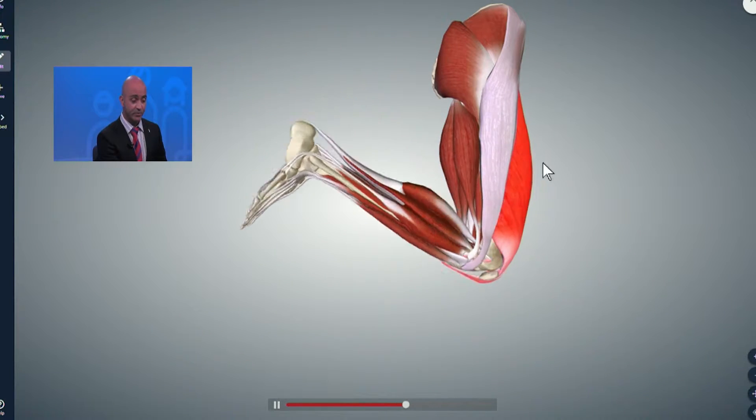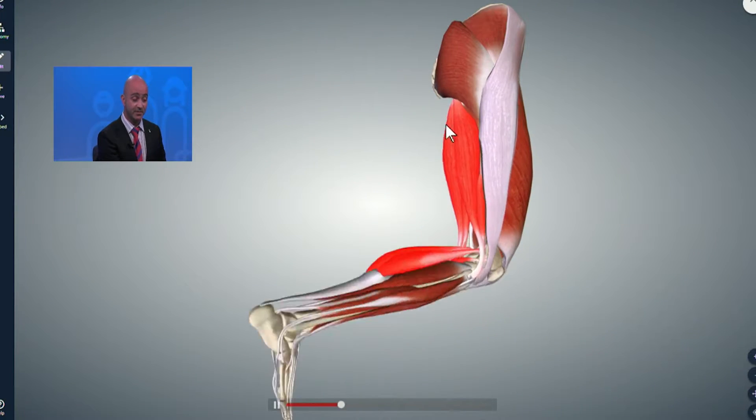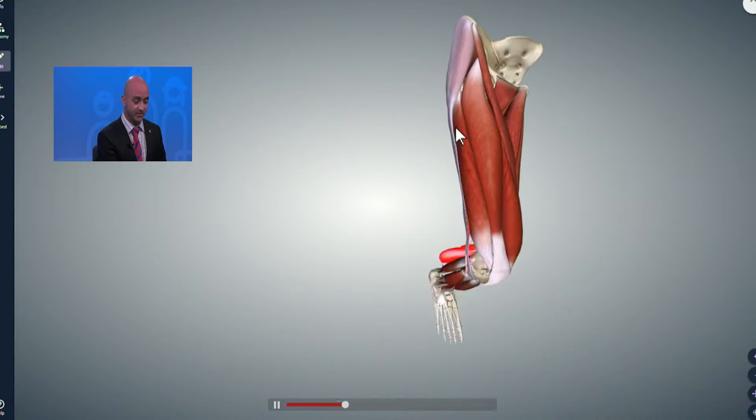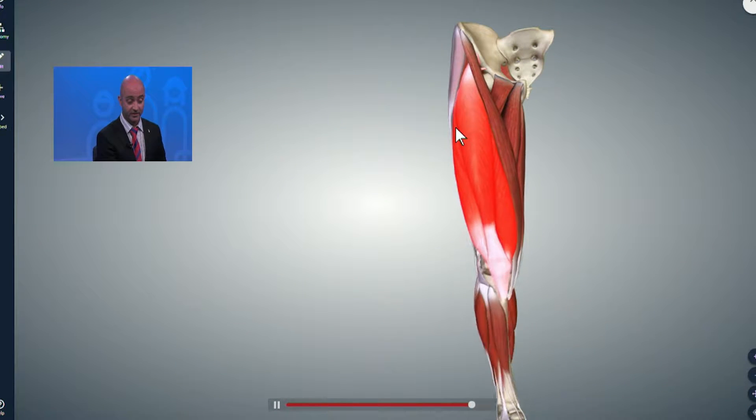Certainly. Your biggest muscles in your thigh are your hamstrings and your quads. If you look at the biodigital model that we have, the hamstrings is a big muscle group that sits in the back of your leg here, and then the quad is a big muscle group that sits in the front of your leg there.